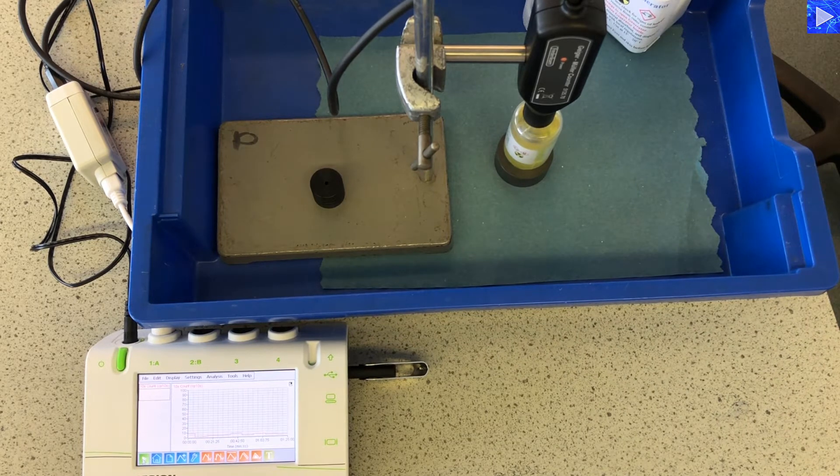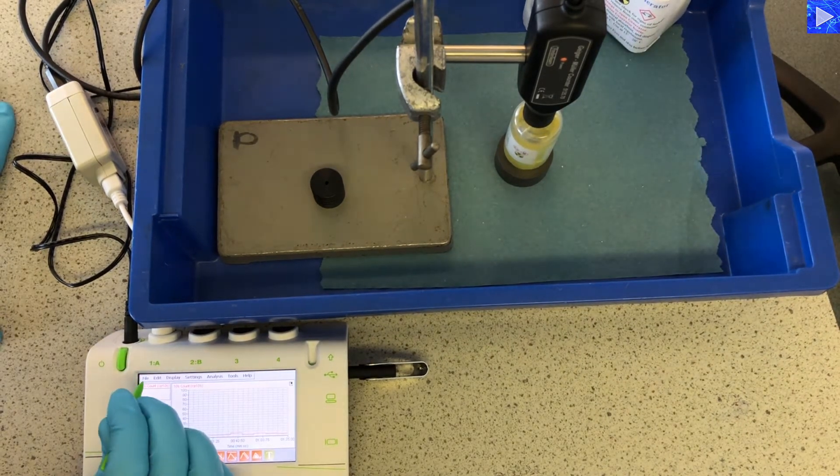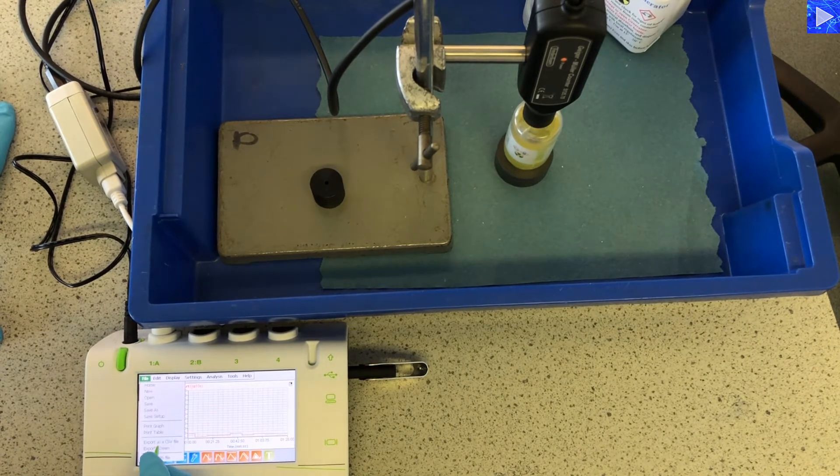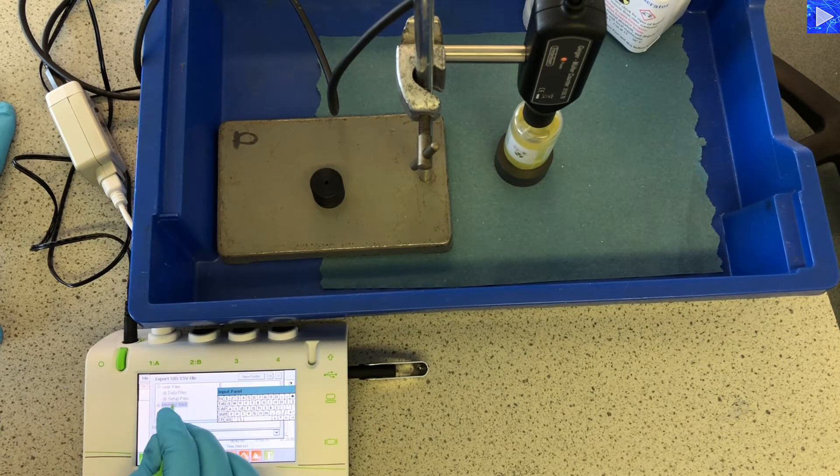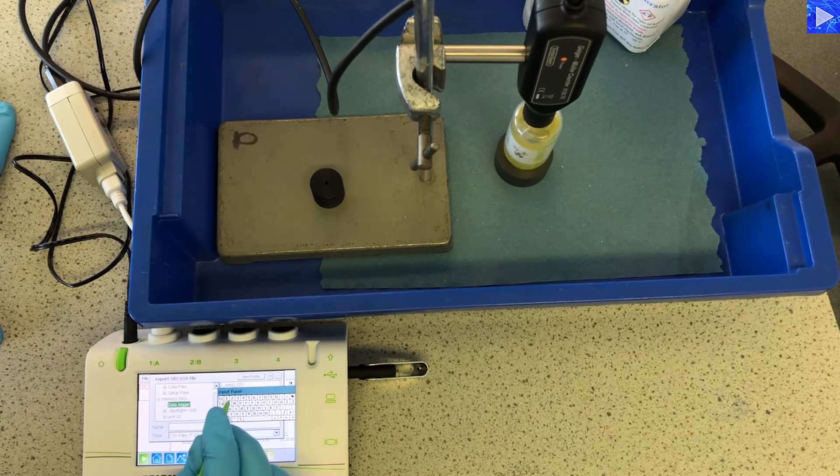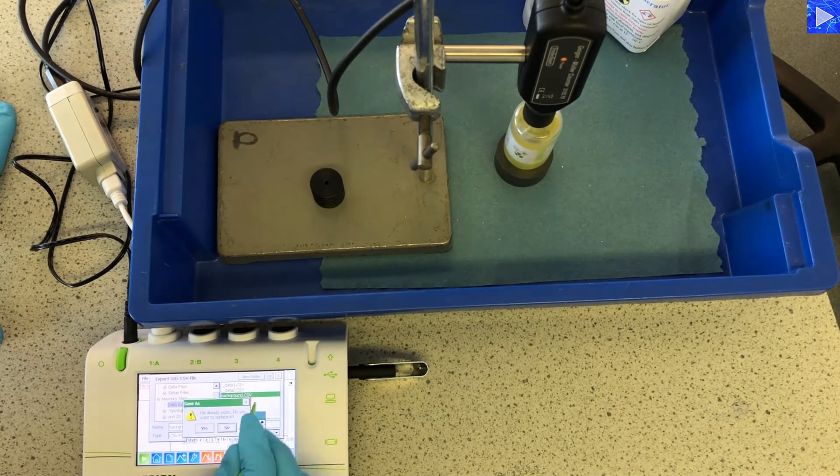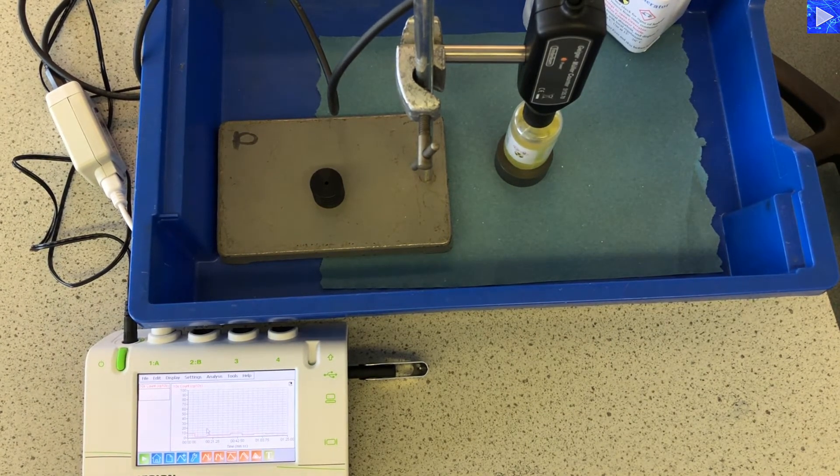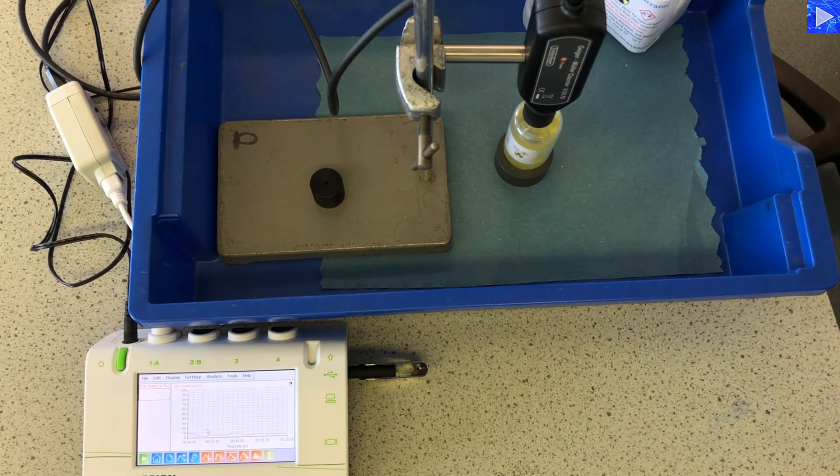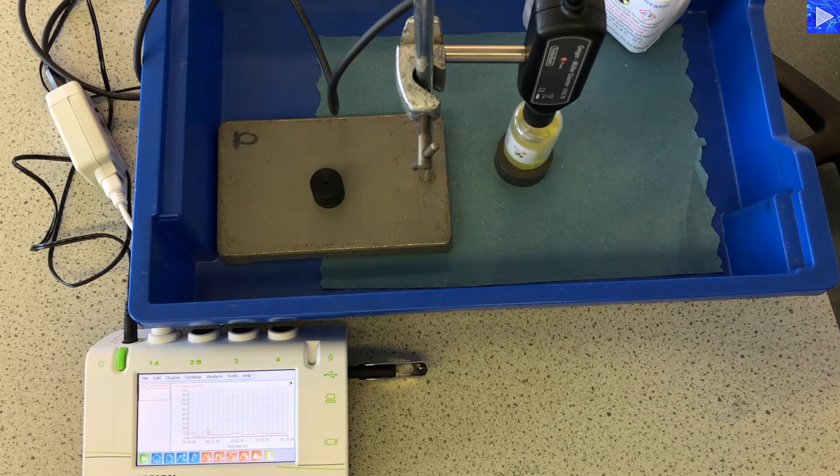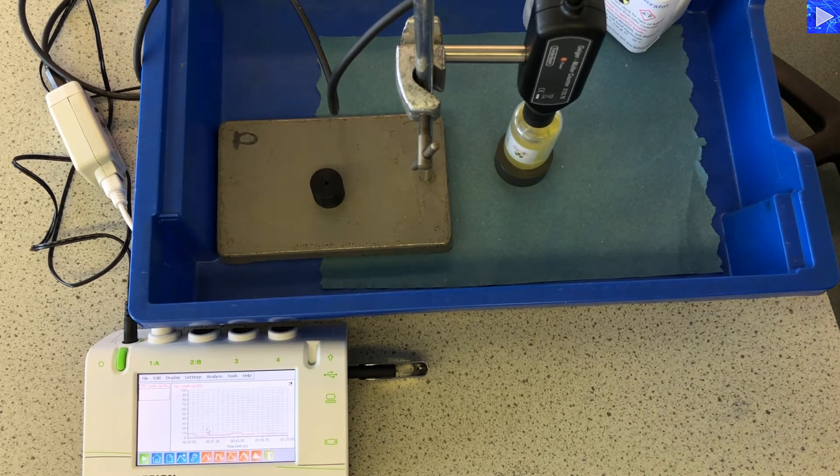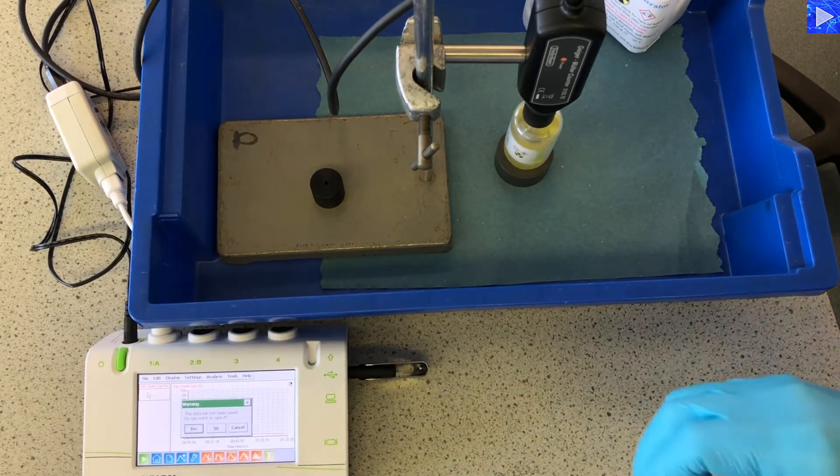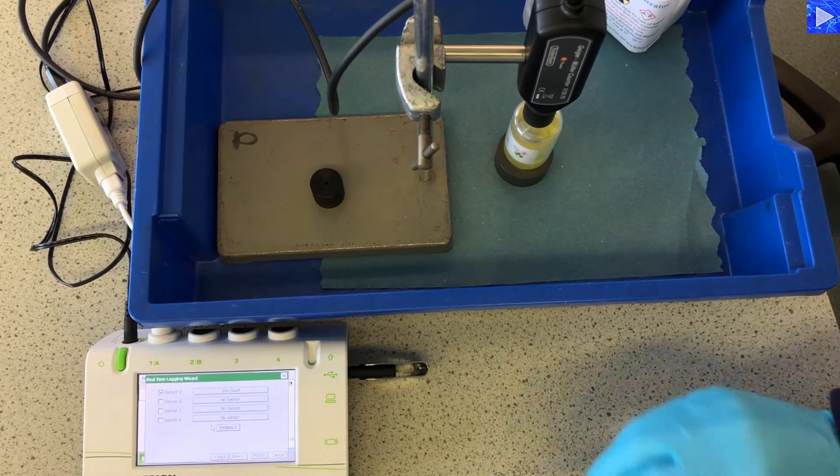So I need to now save this file. I've got a memory stick so I can transfer it to my laptop and save that as background. Now the readings from the protactinium should be good for about five minutes so I'll collect five minutes worth of data for the actual protactinium. I'll need a new file for that so I'm going to file new on my datalogger here. So I'm not saving that because I've got the CSV file already.